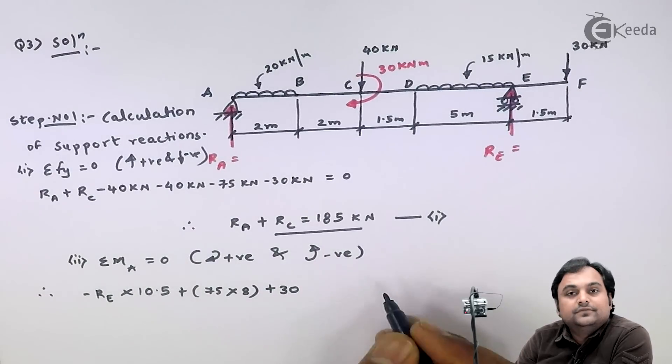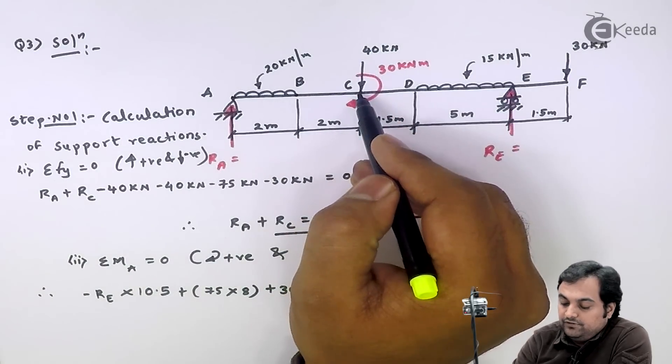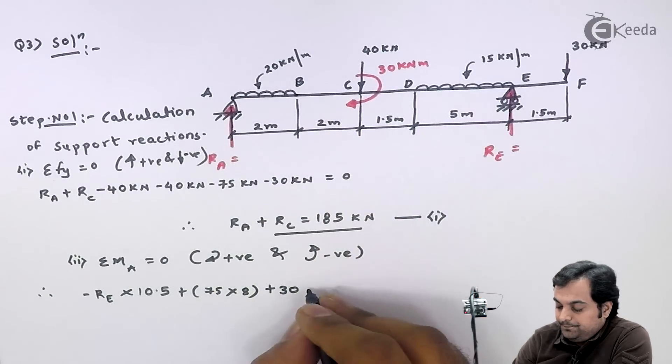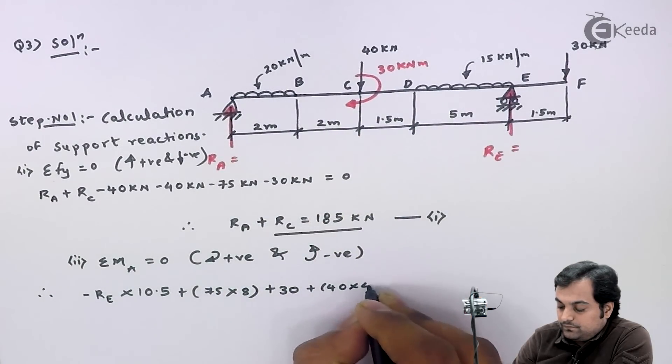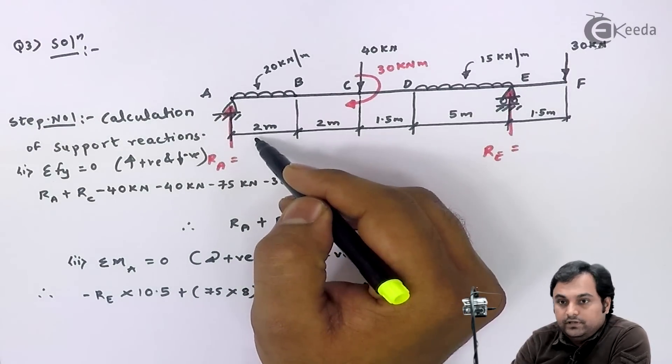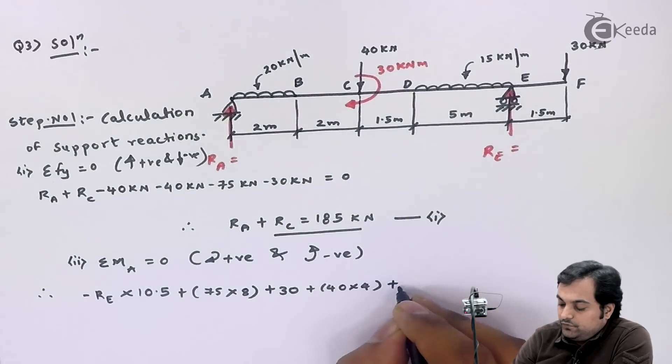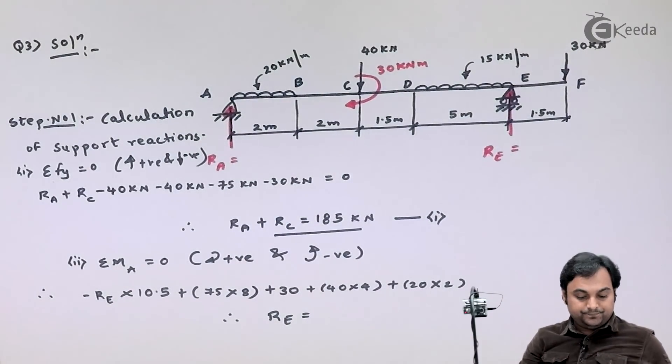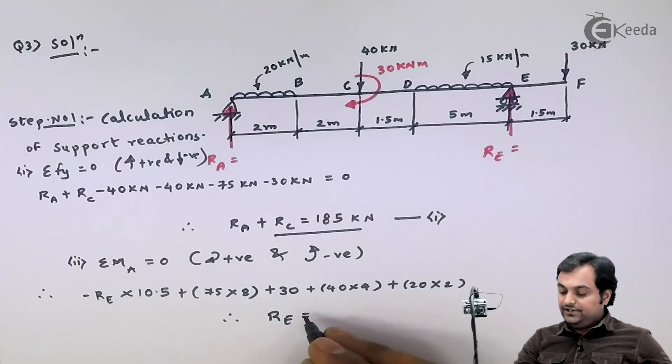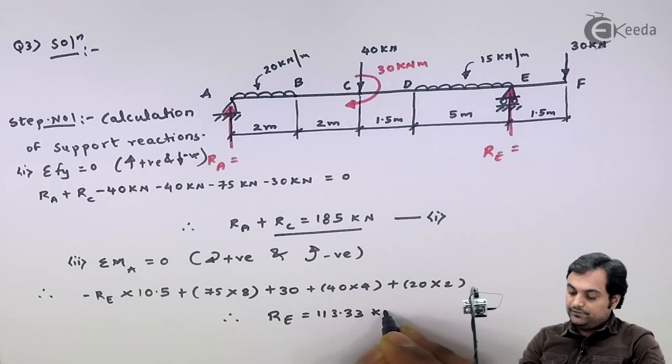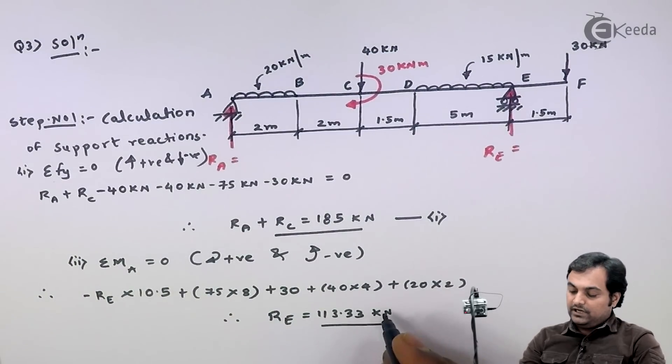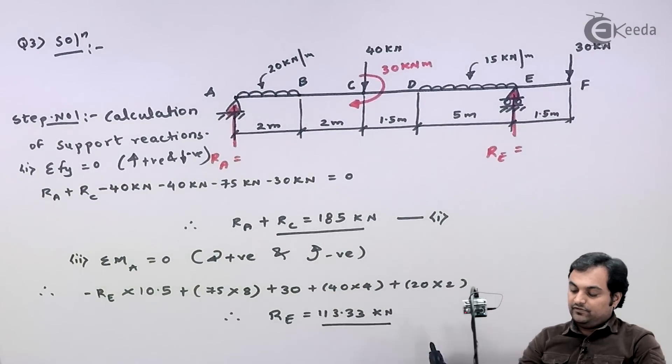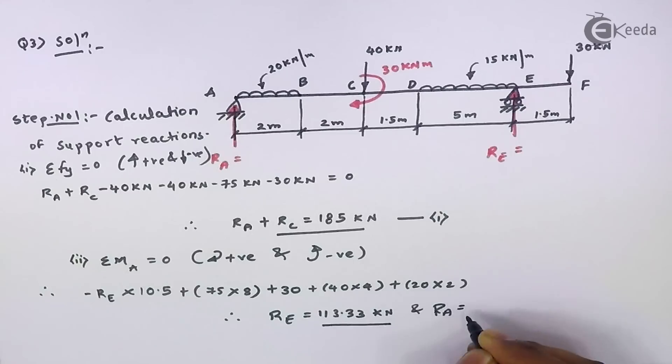Next, 40 kN load will also produce clockwise moment, so 40 into 4. Then I have 20 into 2 acting at half, that's 1, so plus 20 into 2. From this I'm getting reaction at E, it comes out to be 113.33 kN. After we put 113.33 kN in equation number one, I get RA as 71.67 kN. So here I complete step one where I've calculated the support reactions.